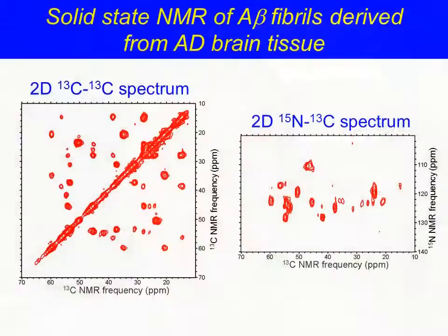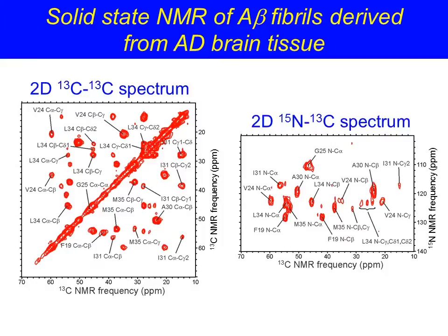We first applied these protocols to tissue from a 72-year-old patient, and obtained quite beautiful solid-state NMR spectra, such as the two-dimensional carbon-carbon and carbon-nitrogen spectra shown here. We were surprised to find that these spectra showed a single set of cross-peak signals for each isotopically labeled residue, indicating that a single 40-residue A-beta fiber structure developed in this patient's brain.